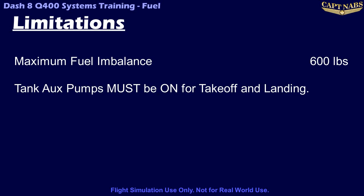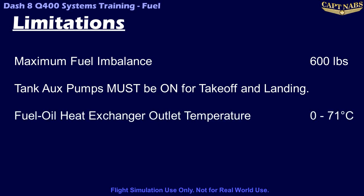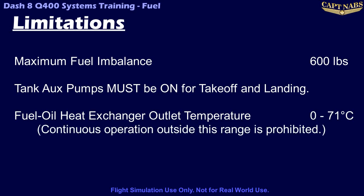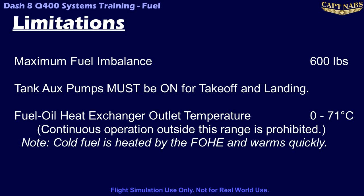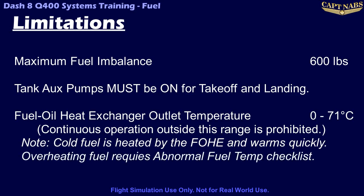During flight away from the ground, the pumps are normally selected off to minimize wear unless they are required. Continuous operation with the fuel oil heat exchanger outlet temperature below 0 degrees Celsius or above 71 degrees Celsius is prohibited. Once a cold engine is started, the warming oil and recirculating fuel usually raises the temperature of the fuel well above 0 degrees very quickly. In the summer, especially during prolonged ground running, it is possible for the fuel heater outlet temperature to easily exceed 71 degrees Celsius. If this occurs, consult the QRH and perform the abnormal fuel temperature checklist.